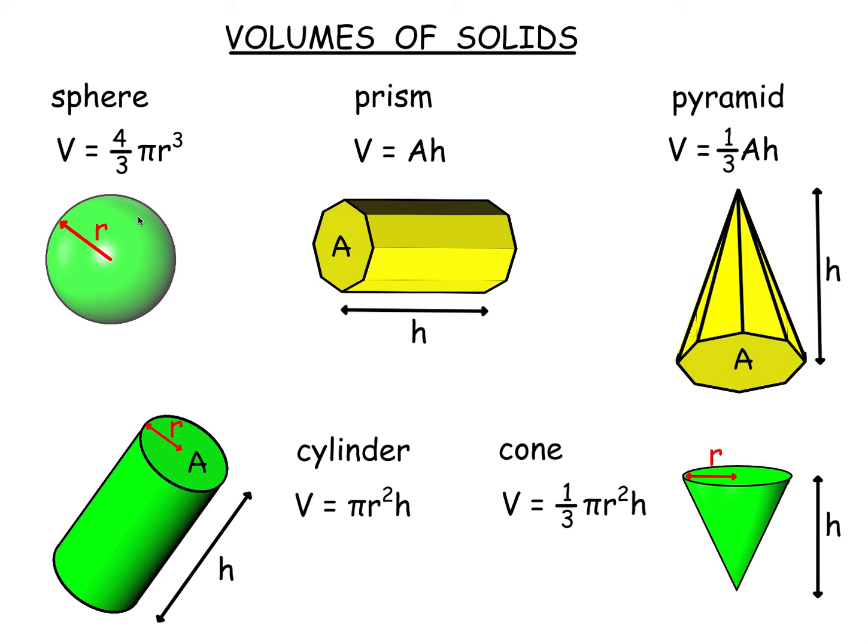So this is a ball of any sort, a ping pong ball, that sort of thing. It's got a radius that's from the center to any point on the surface. And the volume is given by this formula, 4 thirds pi r cubed.